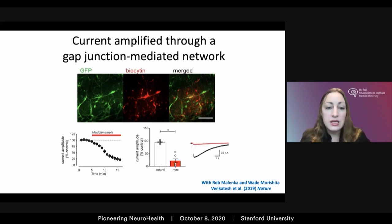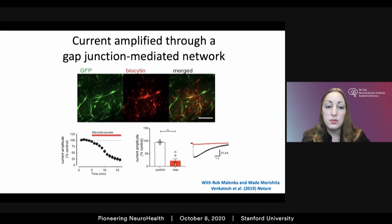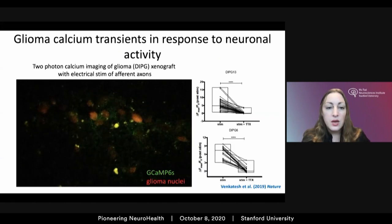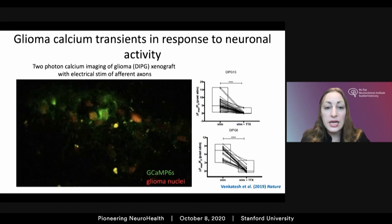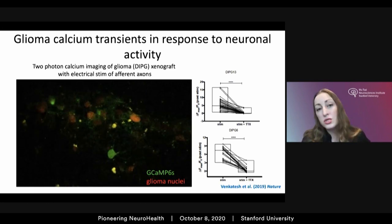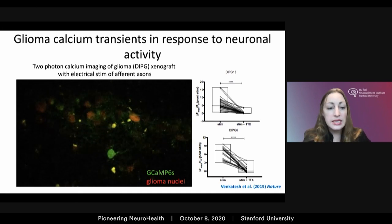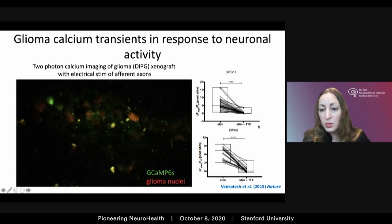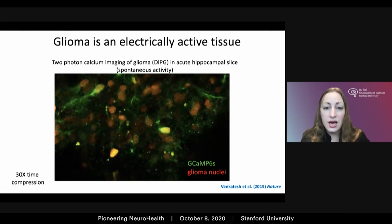We wondered whether this gap junctional coupling was amplifying these potassium-evoked currents. Using multiple different strategies — here I'm showing data from a gap junction blocker called meclofenamate — gap junctional blockade decreases the amplitude of these prolonged currents. We can visualize these currents using genetically encoded calcium indicators: expressing GCaMP6 in human patient-derived glioma cells, then xenografting them, with two-photon microscopy we can see evoked currents from axonal stimulation. These depend upon neuronal activity and are blocked by tetrodotoxin.